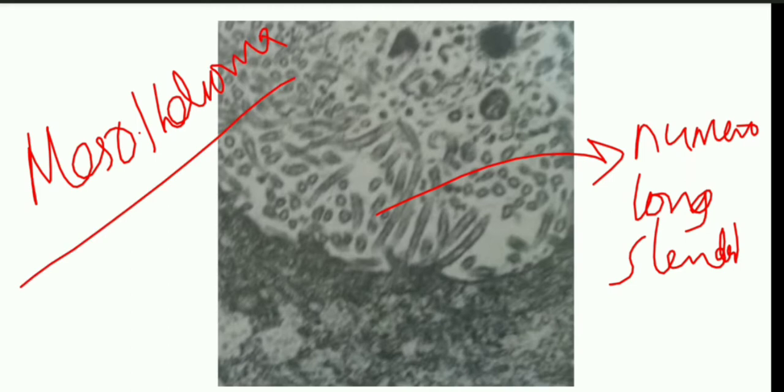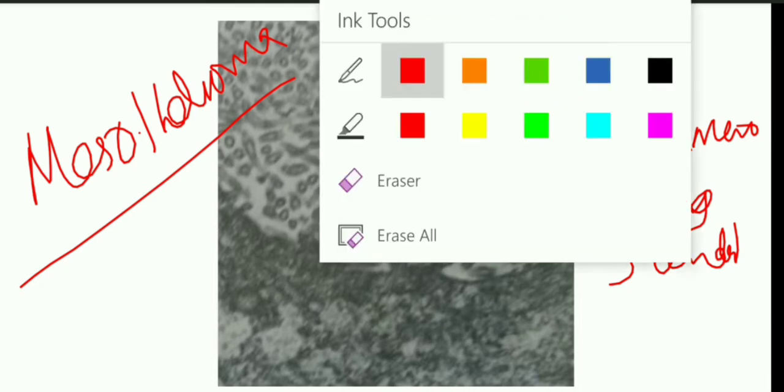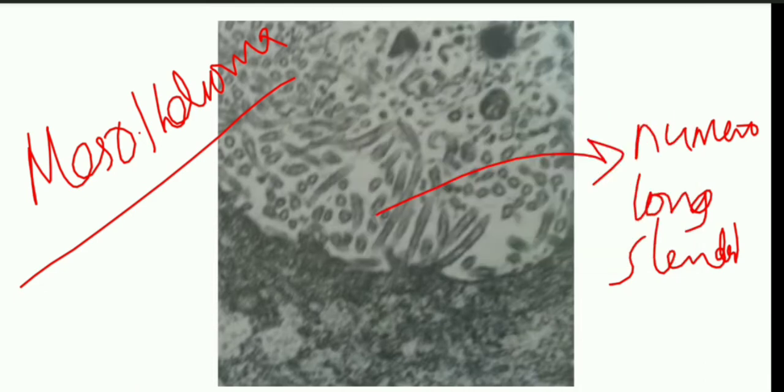You should be able to differentiate between mesothelioma and adenocarcinoma by looking at the size of microvilli. How can you remember? Mesothelioma - it is the long one. Mesothelioma lo. So you can remember it has long slender numerous microvilli, whereas in adenocarcinoma it is short microvilli and also secretory rough endoplasmic reticulum is seen.